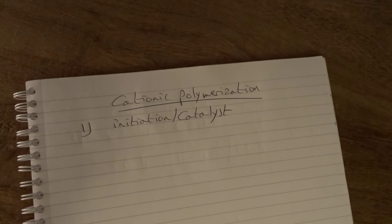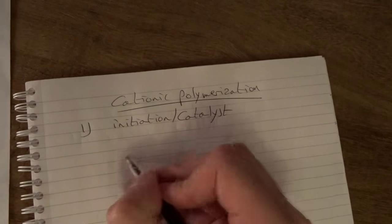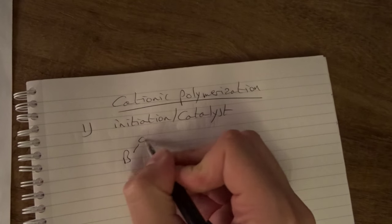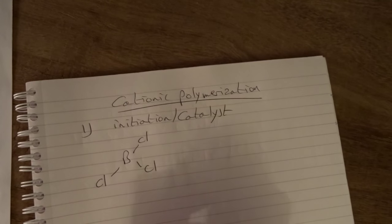In this video we look at the cationic polymerization. The initiation step takes place usually with a Lewis acid, and the Lewis acid is a molecule that can accept a pair of electrons.